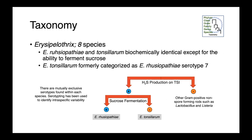We have eight species within the genus Erysipelothrix, with rhusiopathiae being our most important, and tonsillarum being of secondary importance. These two species are actually biochemically identical, except for the ability of rhusiopathiae to ferment sucrose. Historically, Erysipelothrix tonsillarum was actually categorized as a serotype of Erysipelothrix rhusiopathiae. This genus is also characterized by its production of hydrogen sulfide on the TSI slant biochemical test, and this can be useful for differentiating it from other gram-positive rods such as Lactobacillus or Listeria.